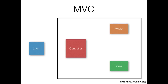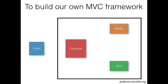This is a standard MVC diagram. We have a client talking to a controller. The controller talks to the model and the view is for rendering the output so that it's consumable by the client. If you would design this kind of model in a Java web application using servlets and JSPs, this would be the standard way to do that — JSPs for the view, business services for the model, and servlets acting as controllers.